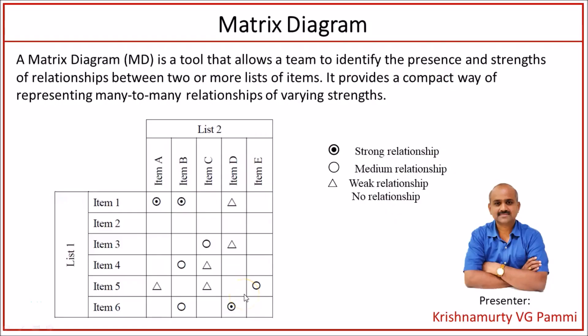We have a technique called matrix diagram that can help us achieve this objective. In real life scenarios, we come across two groups of factors — causes and objectives — where we want to see whether any relationship exists between these two groups.